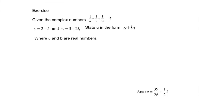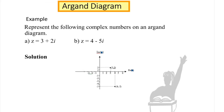Please do the following exercise to enhance your skills. Argand diagram: a complex number can be represented on an Argand diagram, where the x-axis represents the real part and the y-axis represents the imaginary part. For example, z = 3 + 2i and z = 4 − 5i can each be plotted on the diagram.